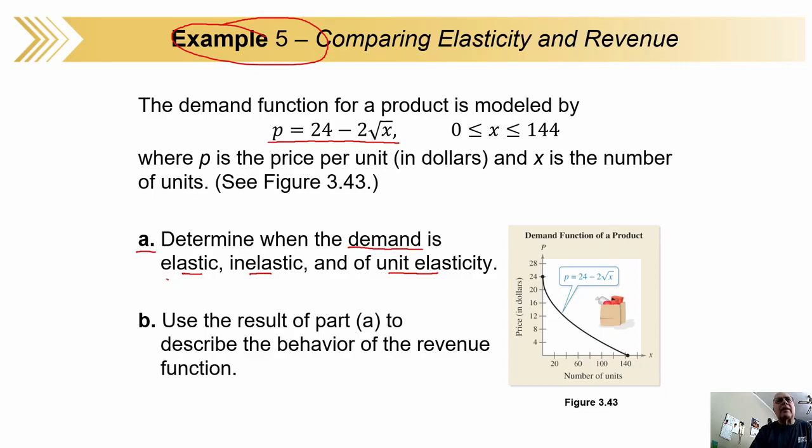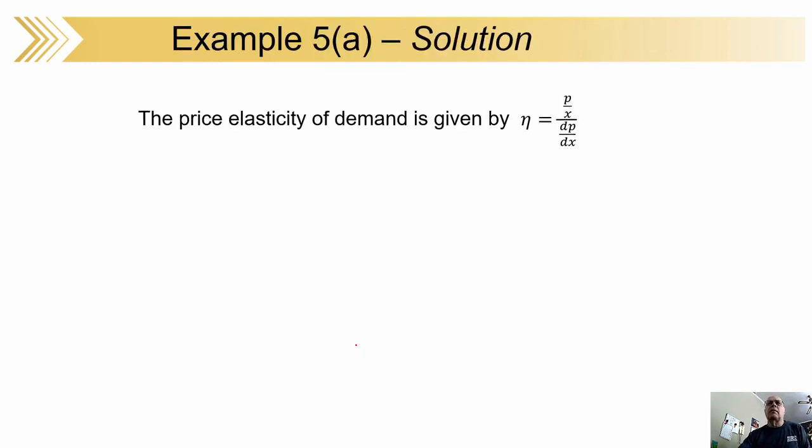We want to find when the demand has those three properties: elastic, inelastic, unit elasticity. Remember, this one means eta is greater than one, this one means eta is less than one, and unit elasticity means eta is exactly one. And then describe the behavior.